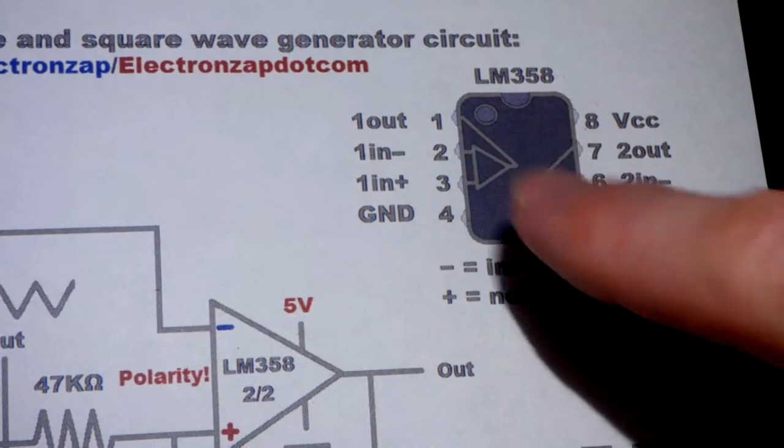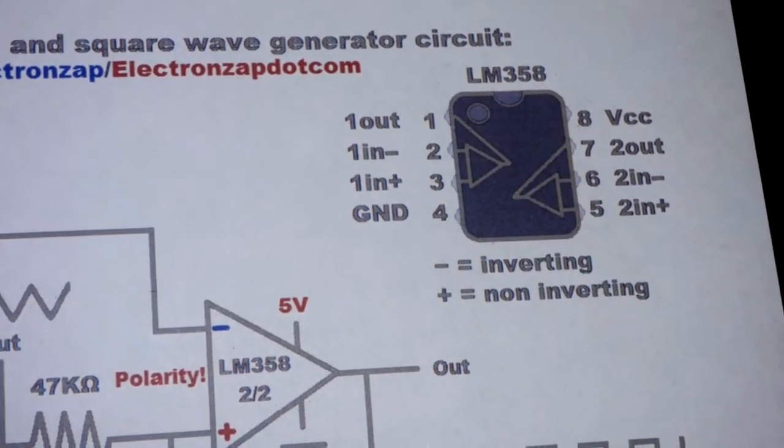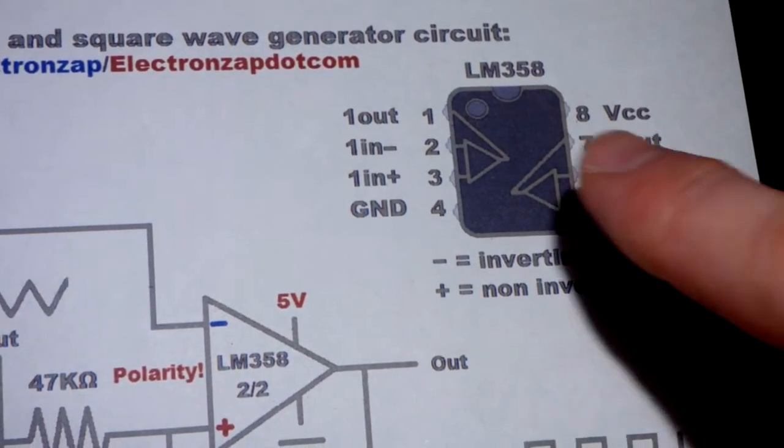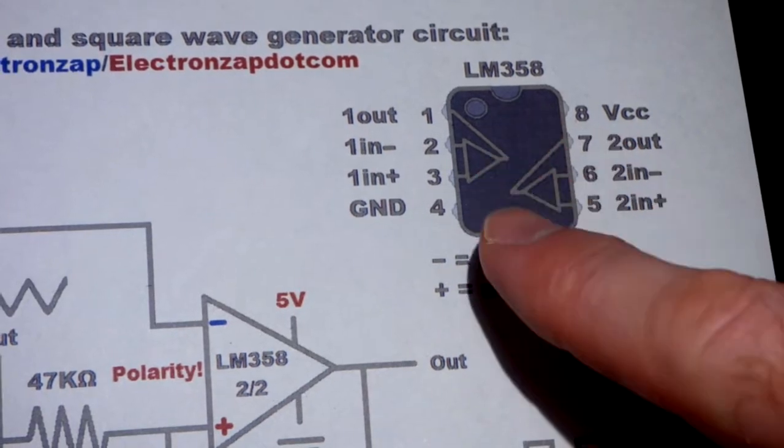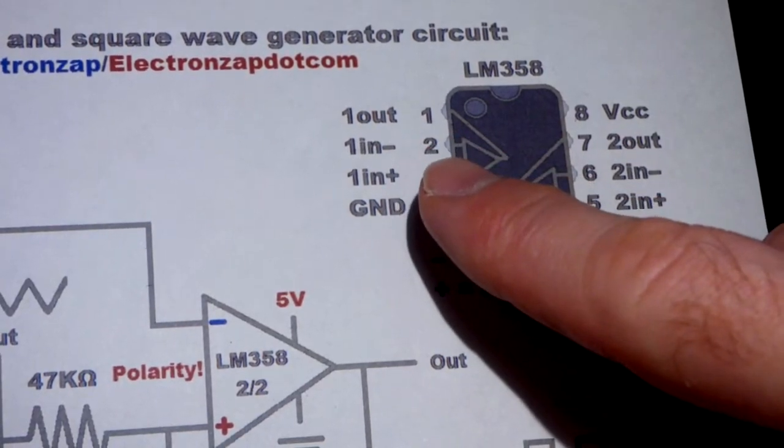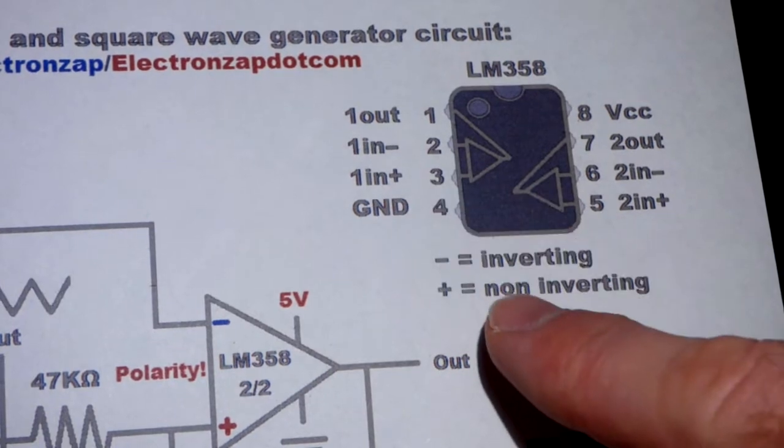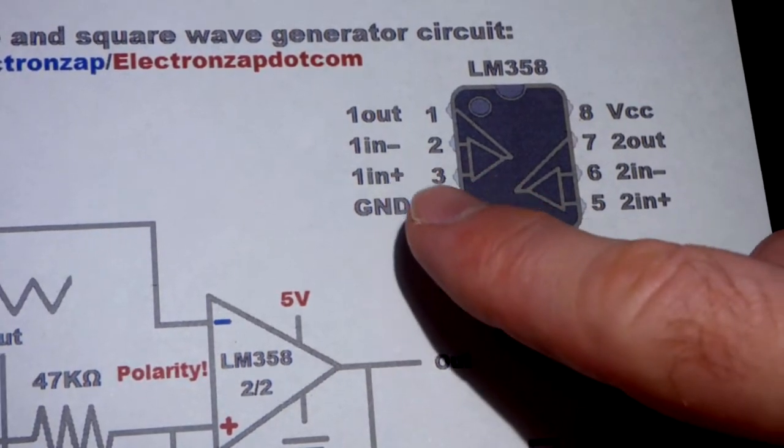This particular one only has that divot, but some integrated circuits have both or one or the other. Pin number one is the output pin, pin number two is the inverting input, pin number three is the non-inverting input, and then we have ground.